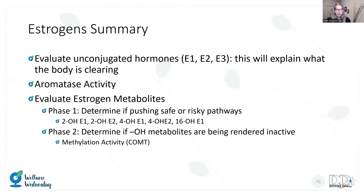A quick summary for the estrogen section: evaluation of unconjugated hormones E1 and E2 gives us our starting material — what the body is clearing and our pool. Think about aromatase activity — is there androgen influence on the estrogens? For risk assessment, are we pushing safer pathways or riskier ones? And then methylation activity — those are the big areas to highlight when looking at this test.